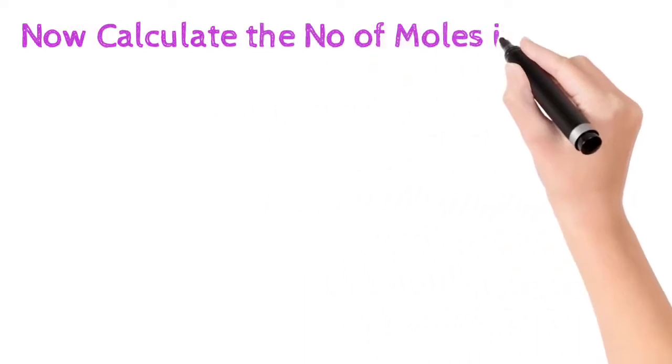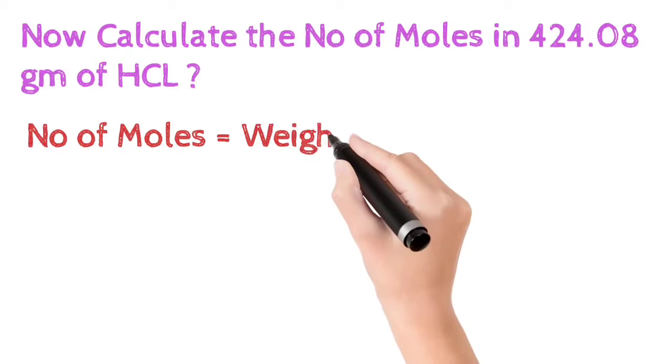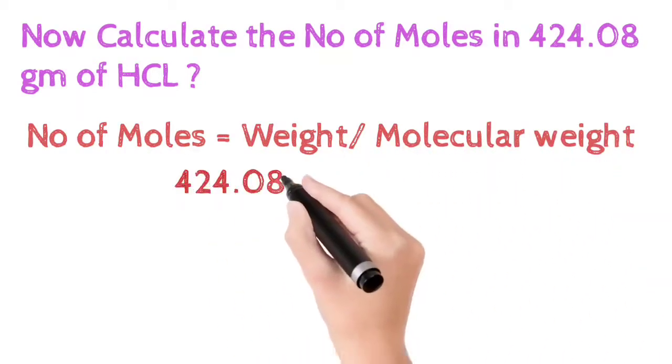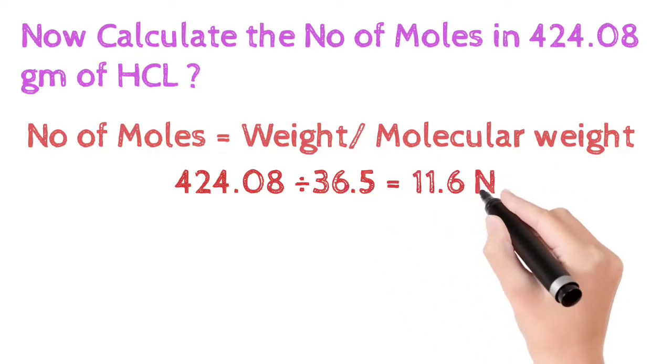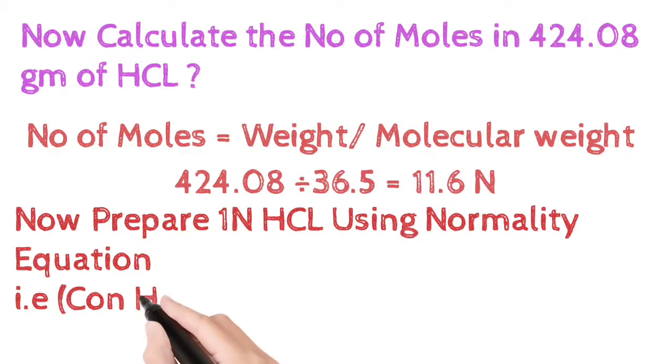Now calculate the number of moles in 424.08 grams of HCl. We know number of moles is equal to weight by molecular weight. So 424.08 grams divided by 36.5, that is molecular weight of HCl, we get 11.6 normality.